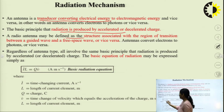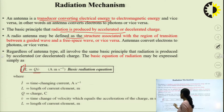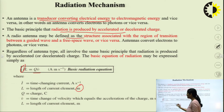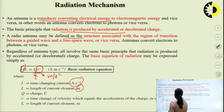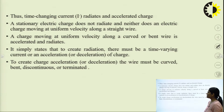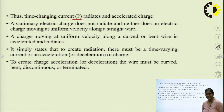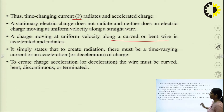The basic equation of radiation is: d(IL)/dt = QV, where İL is time-changing current, L is the length of the current element (units: meters), İ is time-changing current (units: ampere per second), Q is charge (units: coulombs), and V is the time change of velocity, which equals the acceleration of the charge (units: meters per second squared). A time-changing current radiates an accelerated charge. A stationary electric charge does not radiate, and neither does an electric charge moving at uniform velocity along a straight wire. A charge moving at uniform velocity along a curved or bent wire is accelerated and radiates.